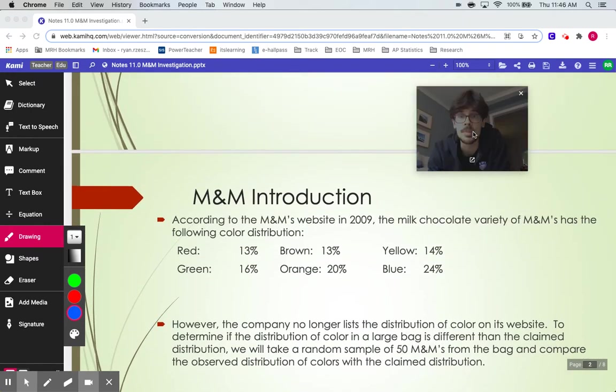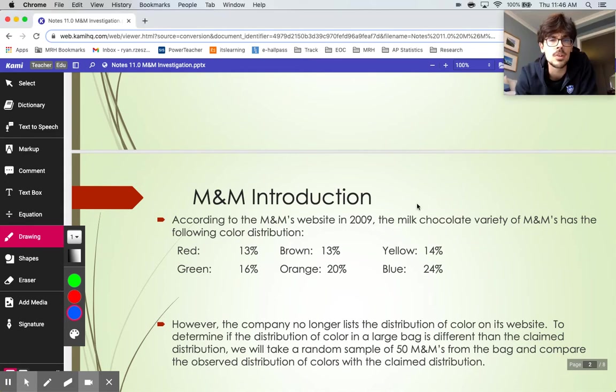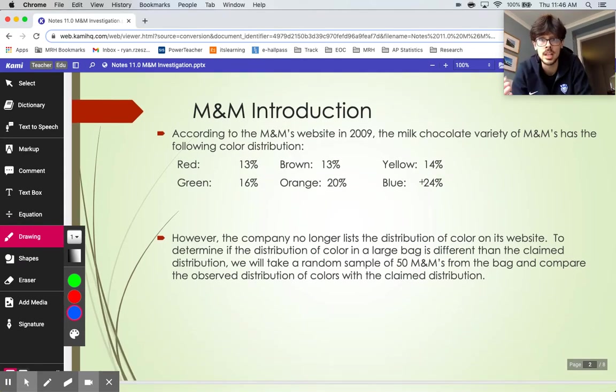So the M&M websites used to have the color distribution published online. They would actually say on their website as of 2009, 13% of our M&Ms are red, 13% are brown, 24% are blue, etc. But after 2009, they actually removed that information from the website. So they no longer say on their website how many M&Ms or what percent of M&Ms are each of the different colors. So what we might want to investigate right here is whether that distribution is still true, if it still is the same, or if changes have been made since they removed that information from the websites.